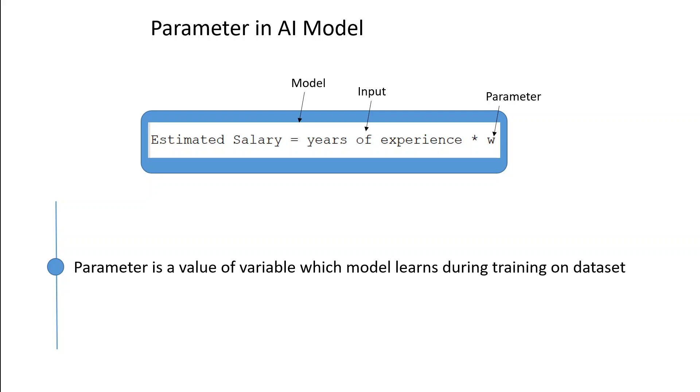So, the parameter W is the value that the model needs to learn from the data during the training process. It determines how much each additional year of experience contributes to the predicted salary.